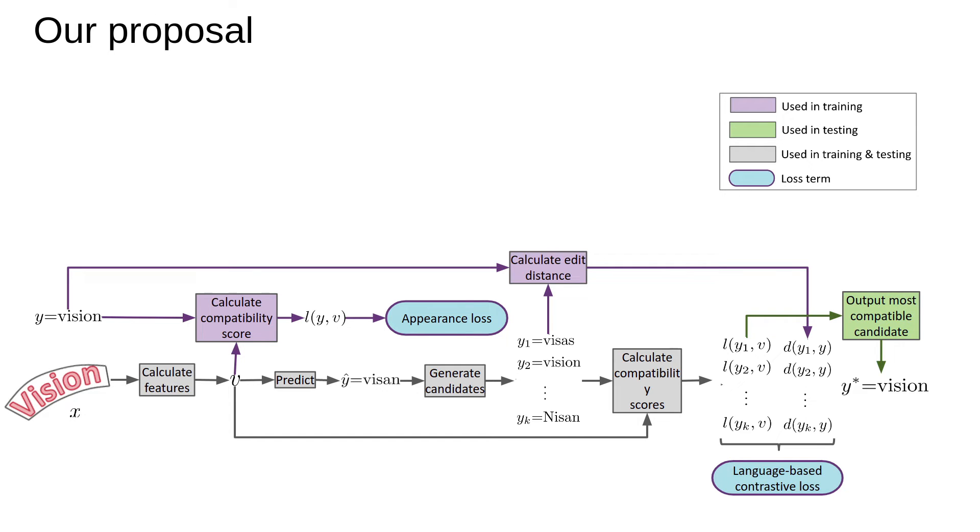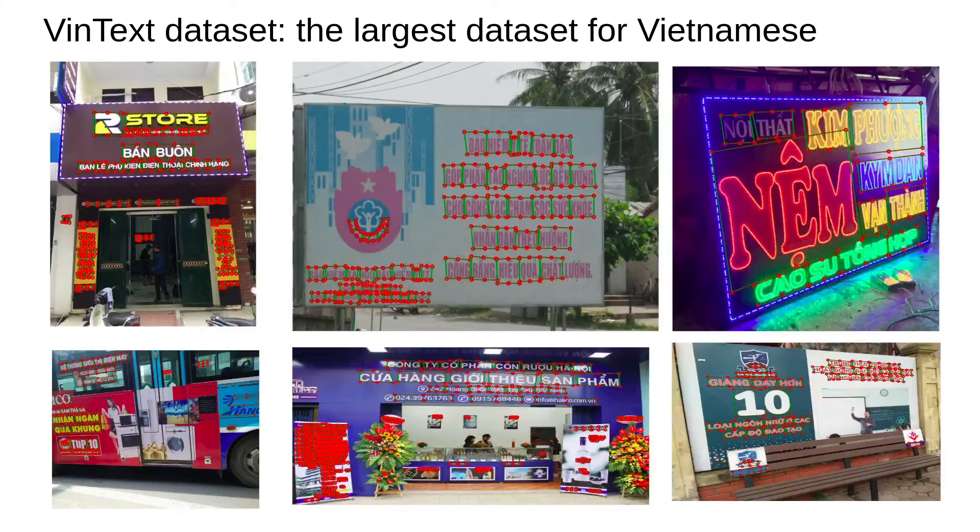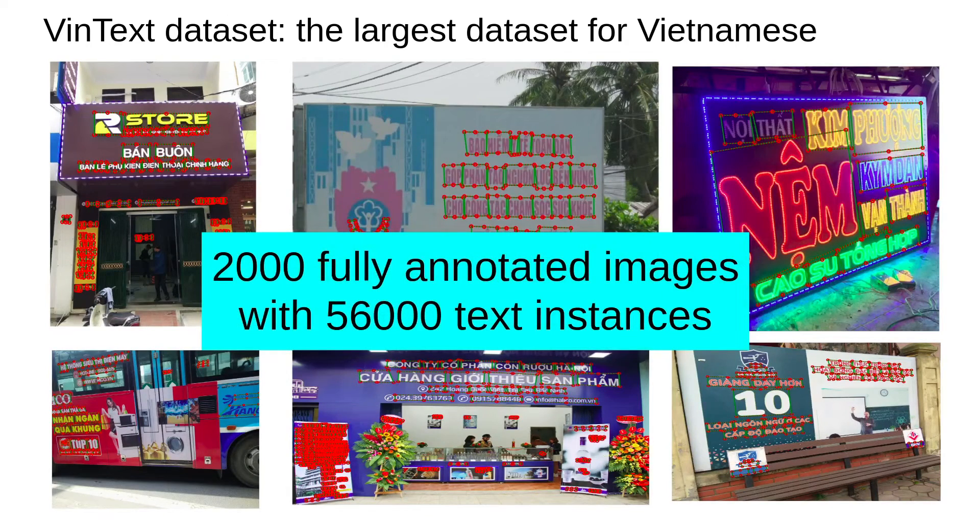In this work, we also propose a novel Vietnamese scene text dataset called VinText. This is a large-scale Vietnamese dataset containing 2,000 fully annotated images with about 56,000 text instances. The images are collected from many sources and diverse image categories. Our dataset not only can be used as a new benchmark to evaluate scene text spotting models, but also can become a potential dataset to try on real world problems.